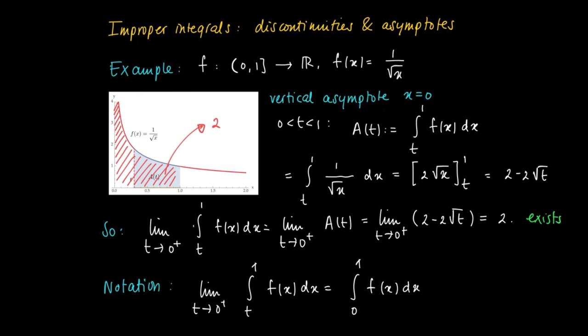So we choose to denote this limit as follows, comparable to a definite integral. The limit of t to 0 plus of the integral from t to 1 of f(x) dx is written as the integral from 0 to 1 of f(x) dx.